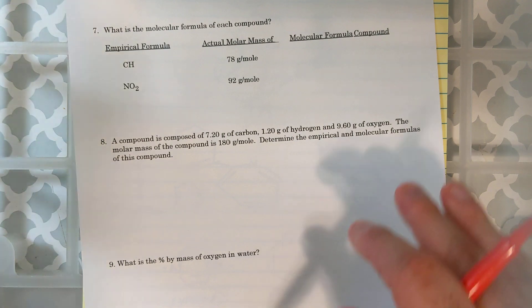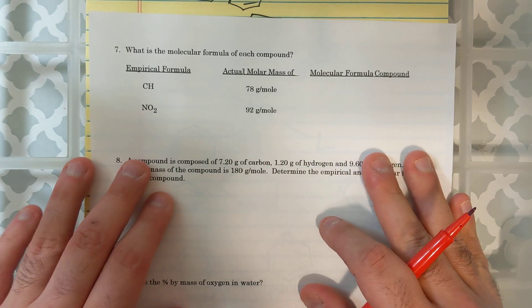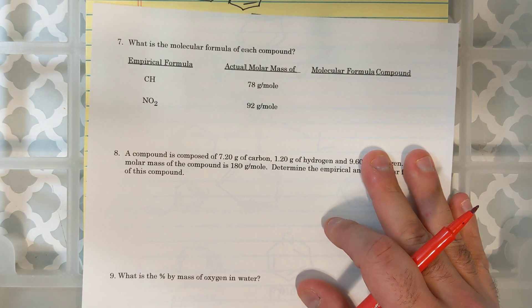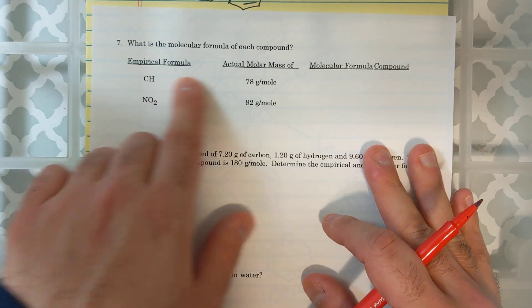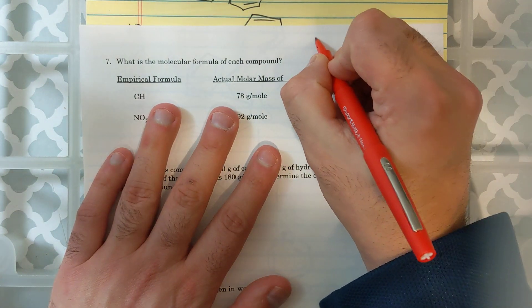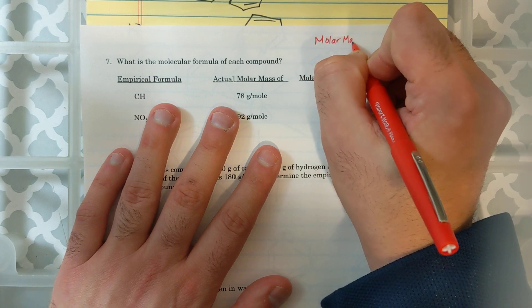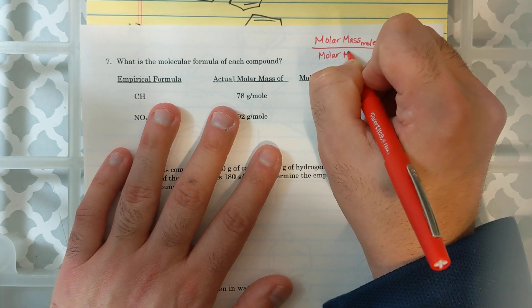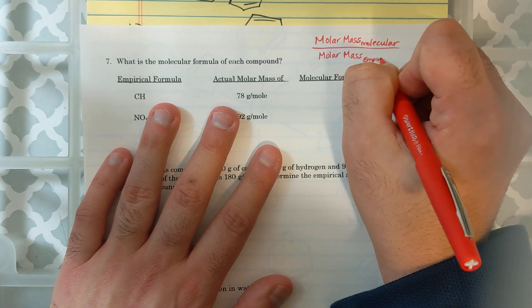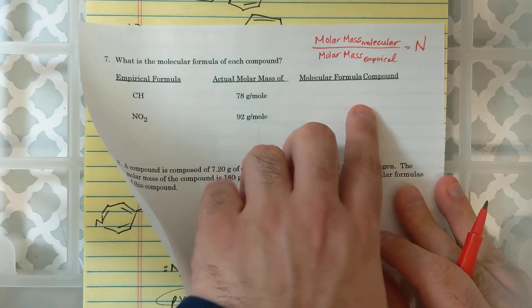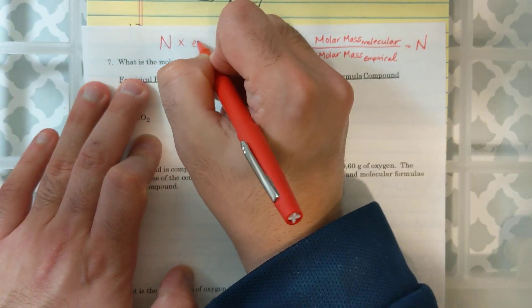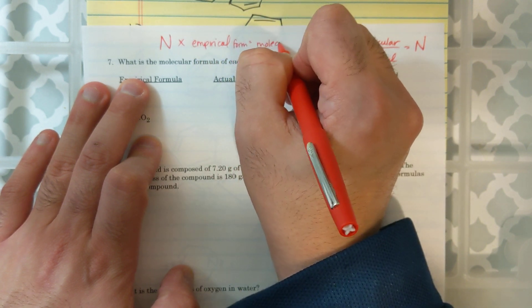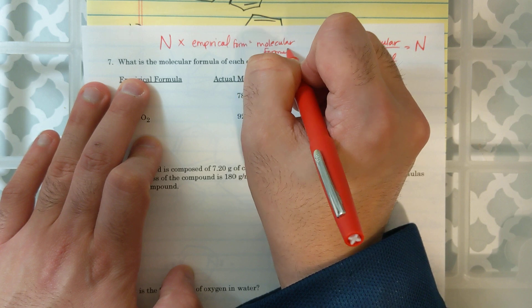So, make sure that you look at any other videos or you ask questions if you did not catch question number 6. Alright, I'm going to move on to question number 7 and probably end this part of the video. For question 7, it says, what is the molecular formula of each compound? So, if you remember from our notes, if I have an empirical formula and I have the molar mass of the compound. If I take molar mass of the molecular and I divide it by the molar mass of the empirical. I'm going to get some number N and this number N is what I multiply times my empirical formula to get my molecular formula. So, that's what we're going to do here.